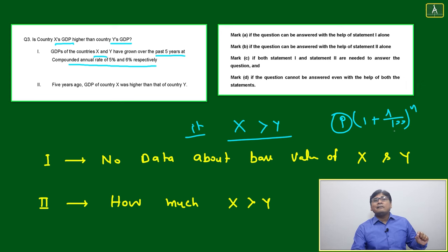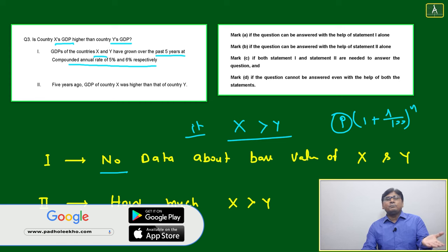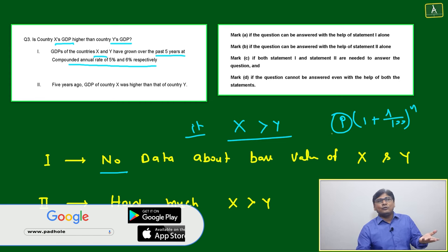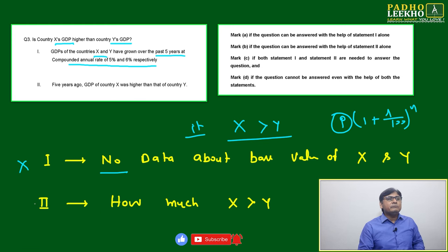Based on statement one, we don't have data about the value of principal amount or P, means initial GDP. We don't have any idea about the GDP value either for country X or country Y from five years ago. So we will not be able to solve this question based only on statement one.